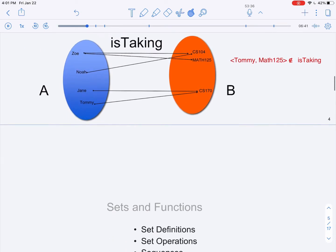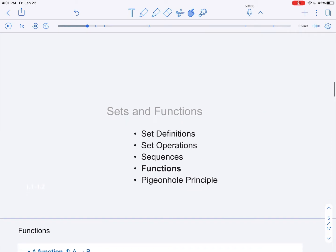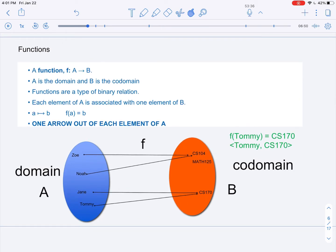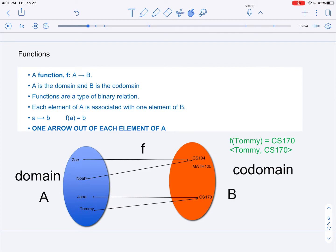Now, we'll see how binary relations relate to functions. Functions, we have them going from set A to B, where A is the domain and B is the codomain. Functions are a type of binary relation.